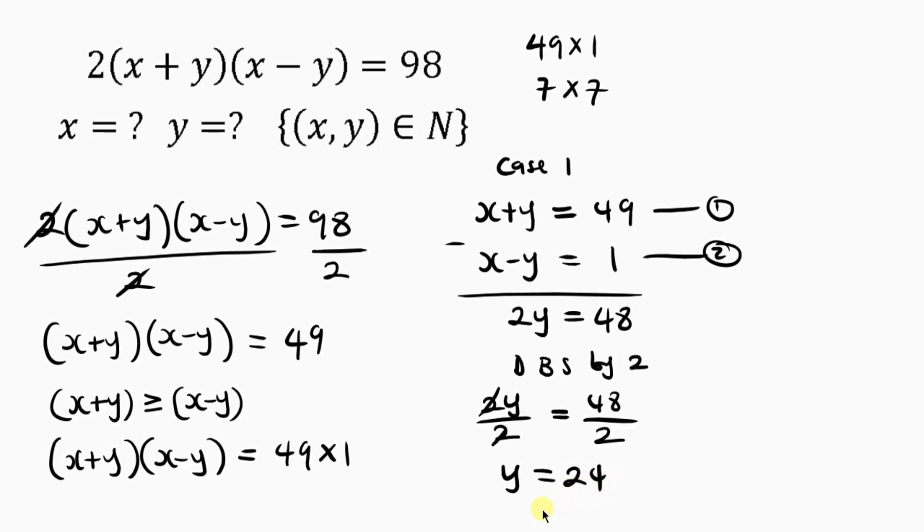So we have the value for y now. So now let's go for the value for x. We can get the value for x when we substitute this value for y in any of this given equation. So I'm going to be putting the value of y in equation 1. So x plus y, I'll be putting the value for y, which is 24, equal to 49.